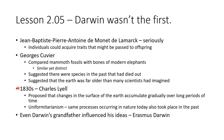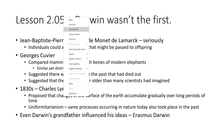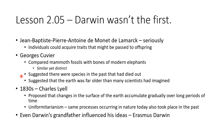In the 1830s, Charles Lyell proposed that changes in the surface of the Earth accumulate gradually over long periods of time — uniformitarianism. That means the same processes occurring in nature today also took place in the past. So if these processes are occurring today, they must have occurred in the past as well. And even Charles Darwin's grandfather influenced his ideas. Charles Darwin was not the first person to have ideas of evolution.